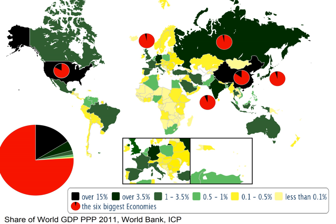Employment — unemployment rate: 8.7%; 30% combined unemployment and underemployment in many non-industrialized countries; developed countries typically 4% to 12% unemployment. Industrial production growth rate: 3%.